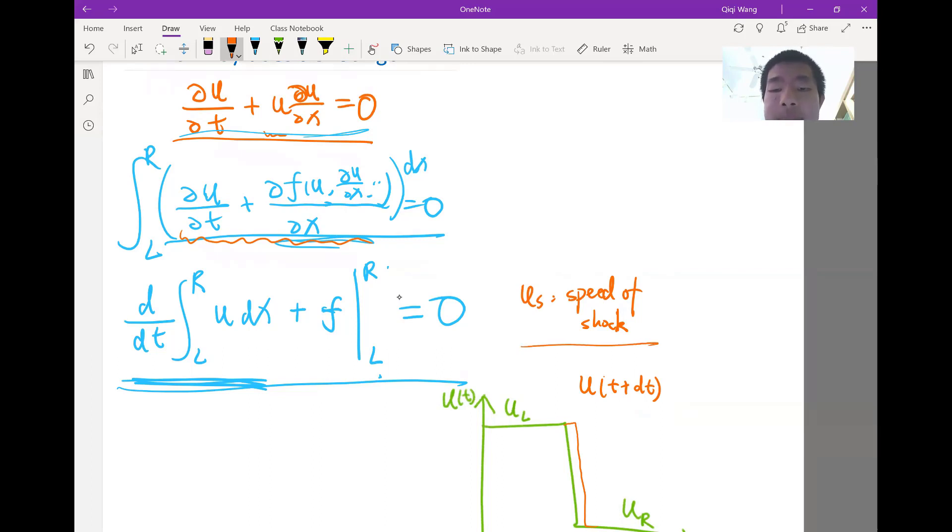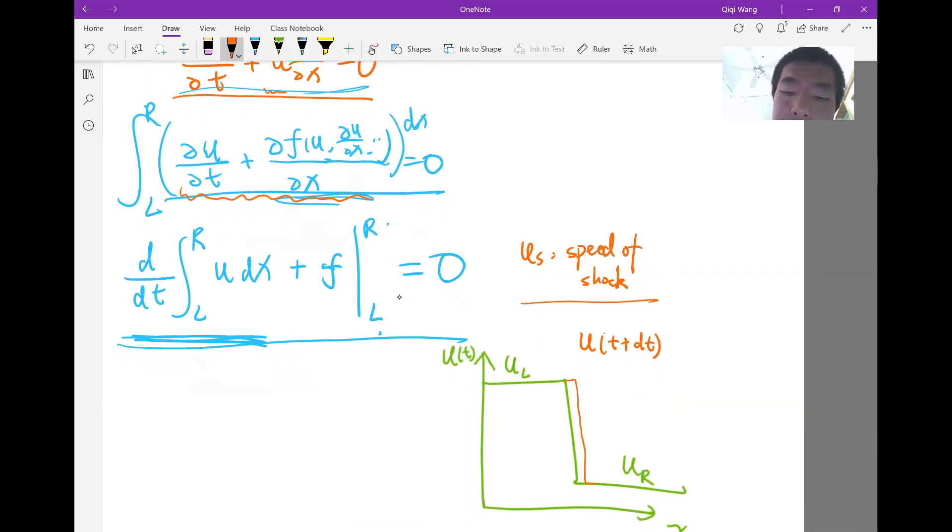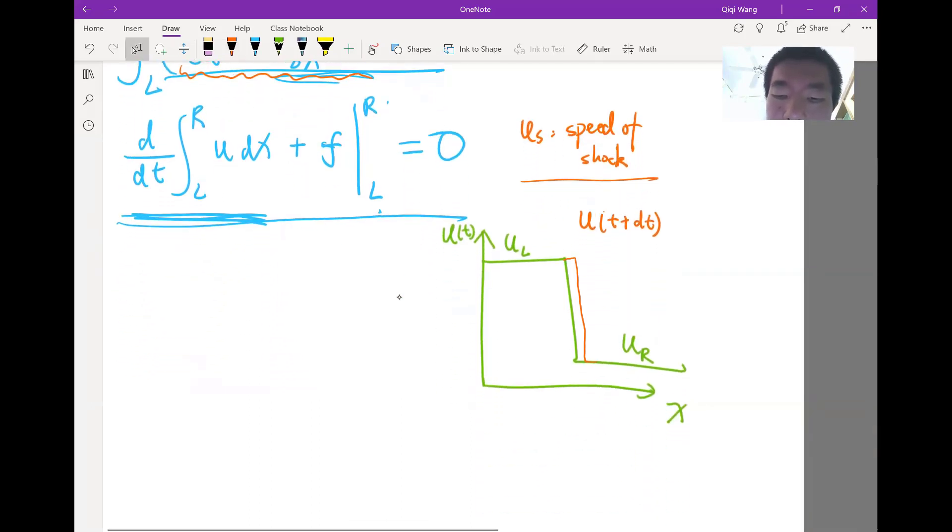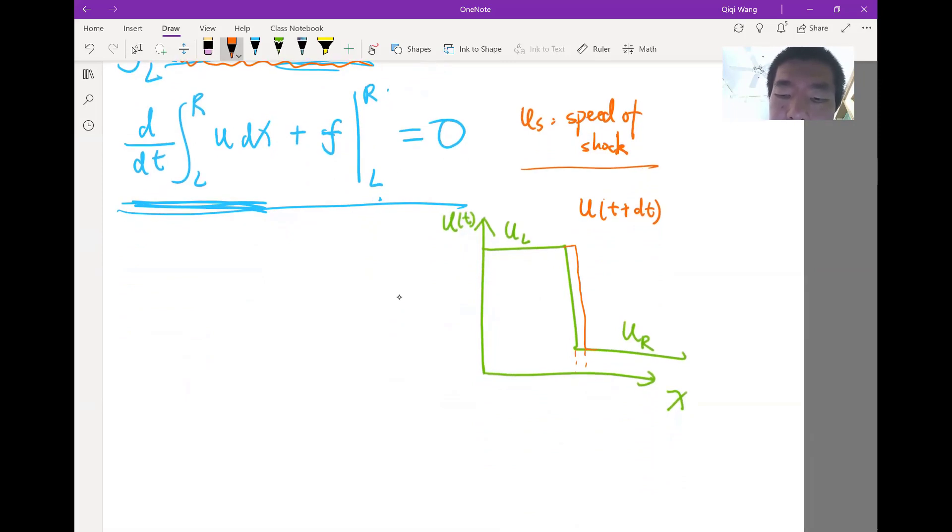But if I assume the speed of shock is us, then the location of the shock is going to be shifted. And how much would be shifted? Would be the speed times dt.